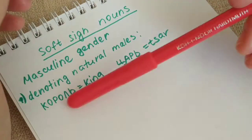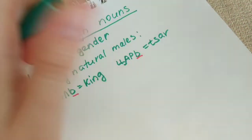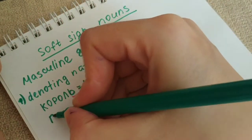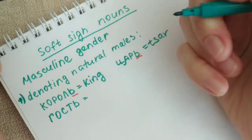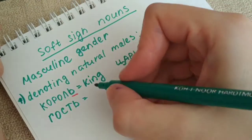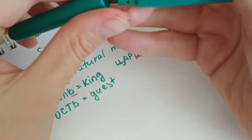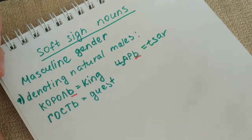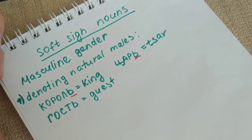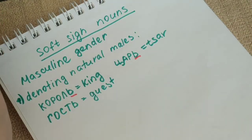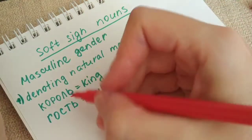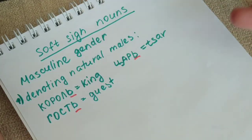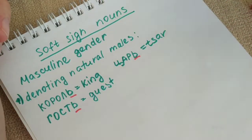But those are the obvious examples. Let me give you another example that is not that obvious. For example, the word гость — meaning 'guest.' A guest can either be a woman or a man, of course, but in Russian, historically, it became known that гость belongs to the masculine gender. You have to remember that гость, ending in the soft sign and meaning 'guest,' is of a masculine gender.